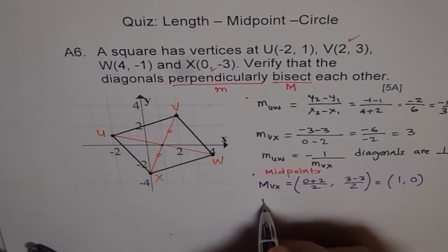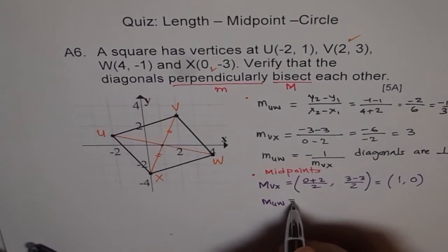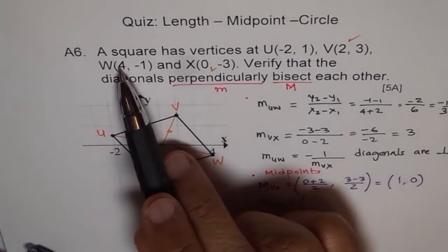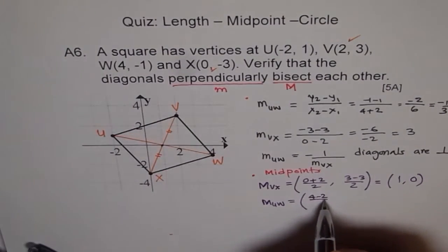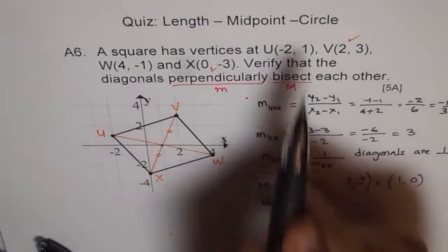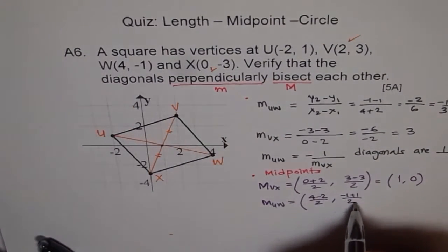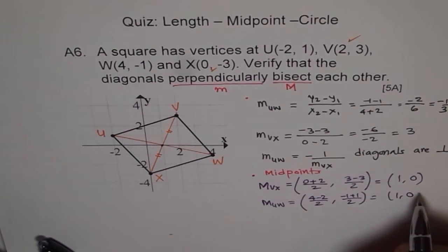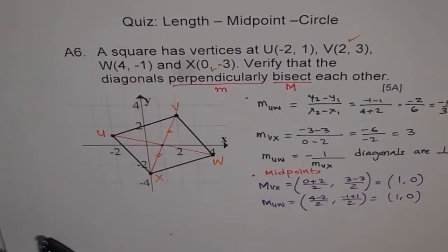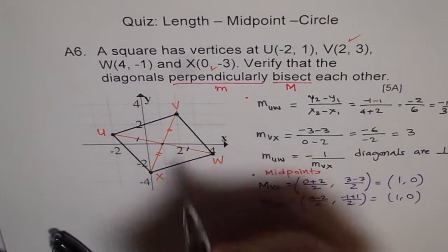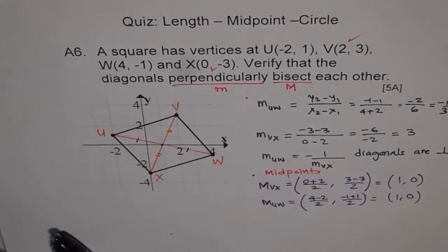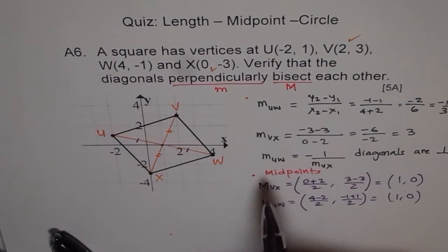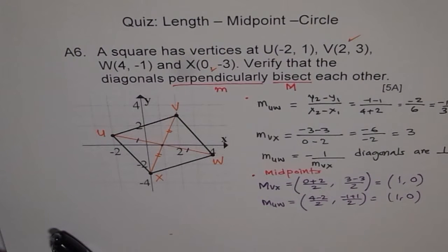Similarly, let us find midpoint for UW. U is (-2, 1) and W is (4, -1). x-values: (4 + (-2)) / 2 = 2/2 = 1. y-values: (-1 + 1) / 2 = 0/2 = 0. So the midpoint is also (1, 0). The midpoints are the same, therefore we proved the diagonals bisect each other. We have proved that the diagonals of this square perpendicularly bisect each other. Slope should be negative reciprocal and midpoint should coincide.